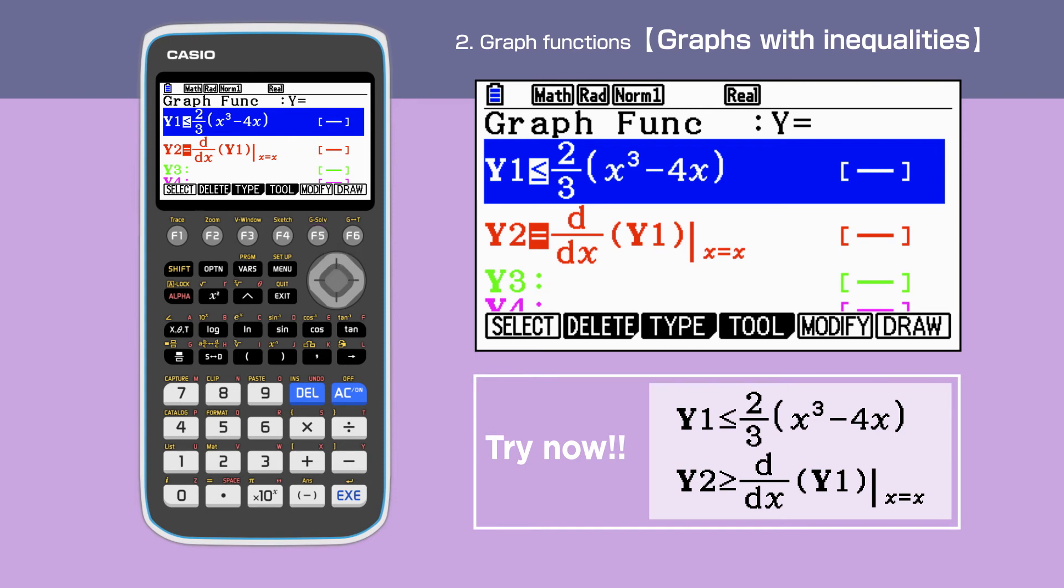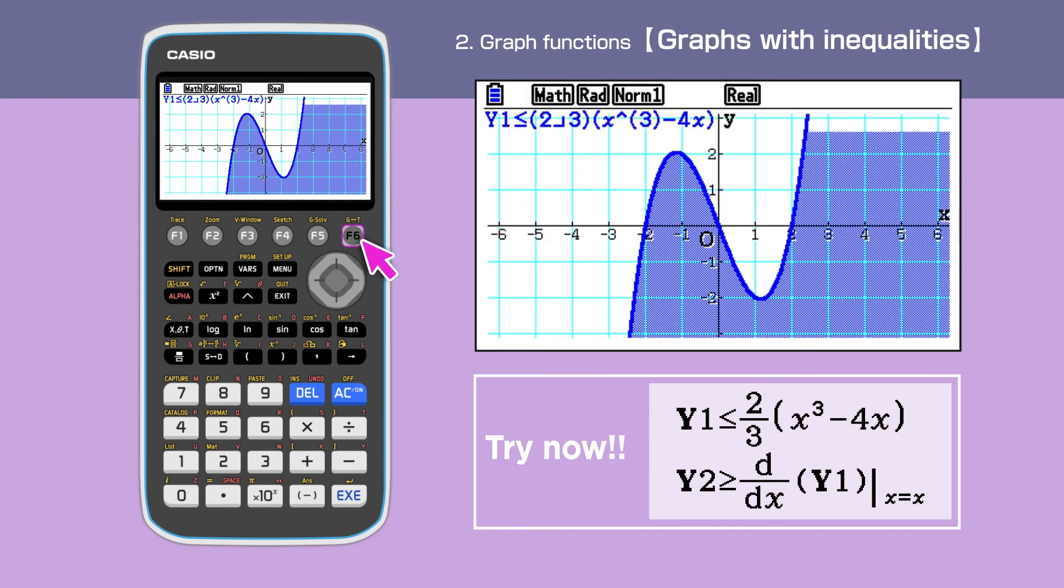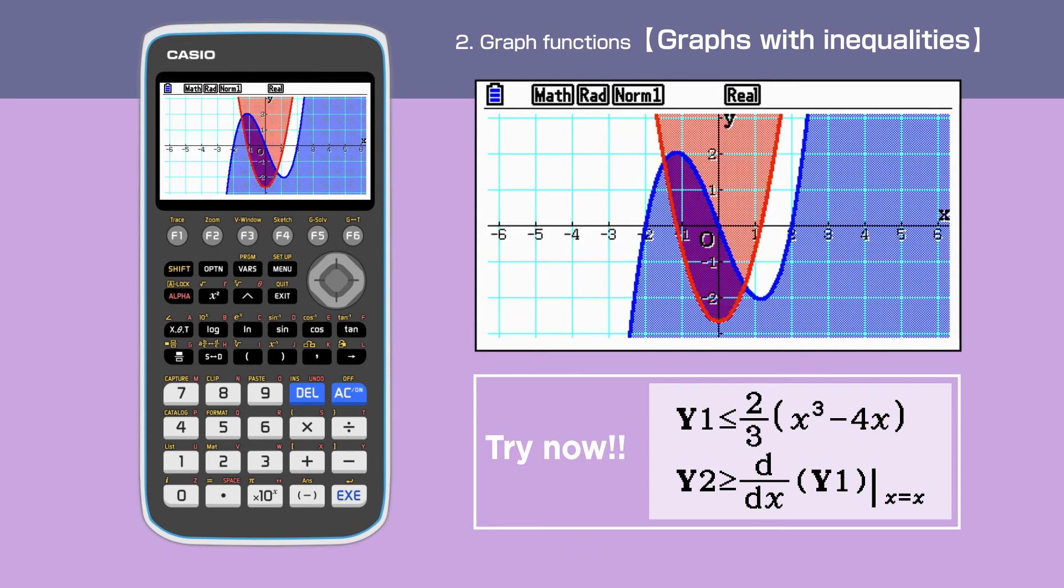We also change to the same inequality with equation y2. Press F6 to draw the graphs. The areas have been colored in blue and red to satisfy both inequalities. In this example, union areas have been highlighted,